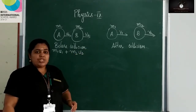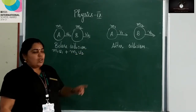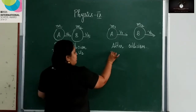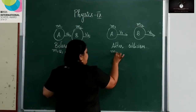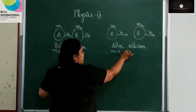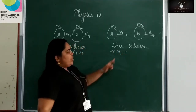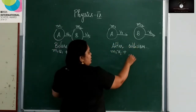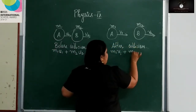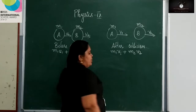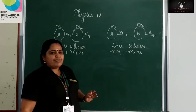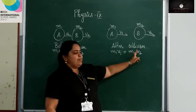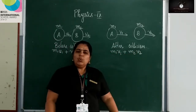What about after collision? What is the momentum of A after collision? m1v1. And what is the momentum of B after collision? m2v2. So the total momentum after collision is m1v1 plus m2v2.